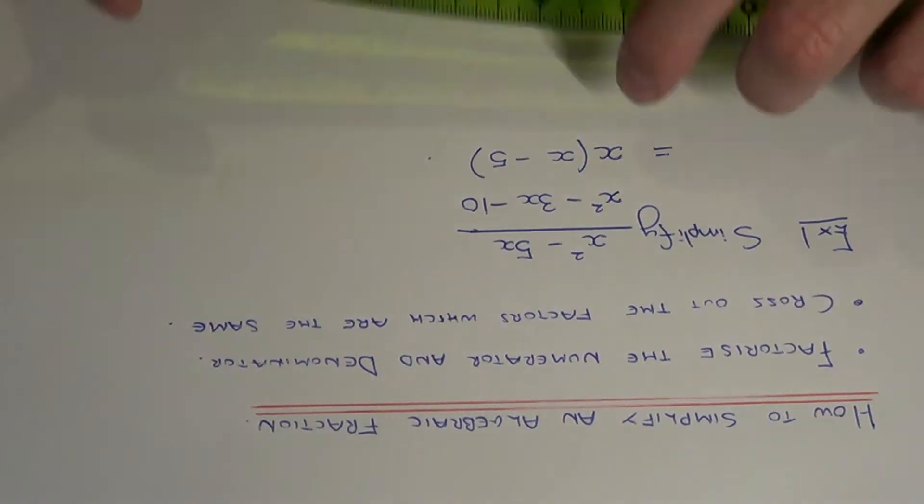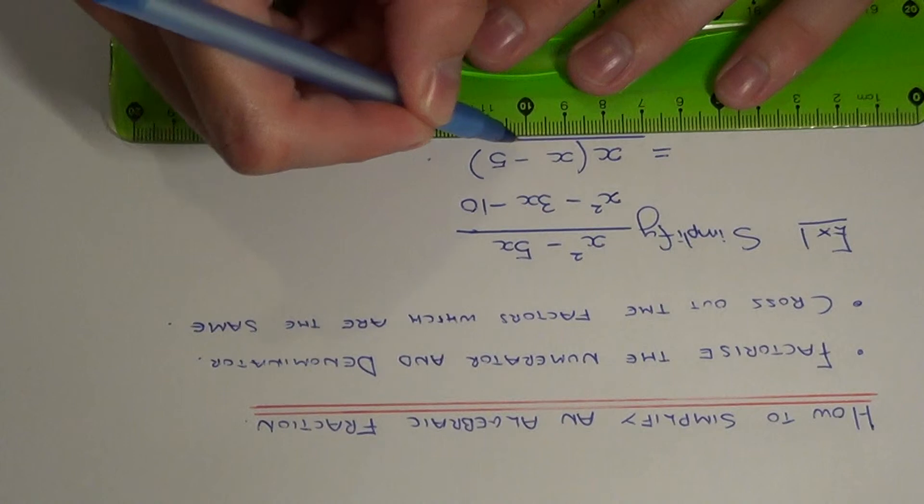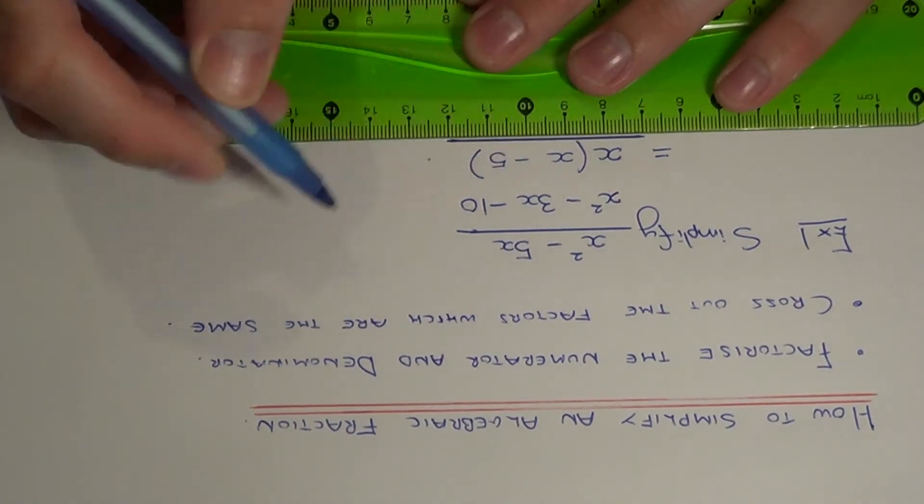That's the numerator completed, so we just need to now factorise the denominator.